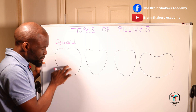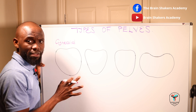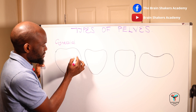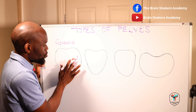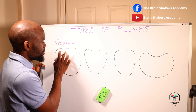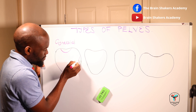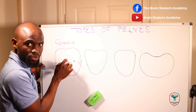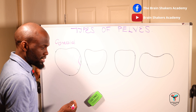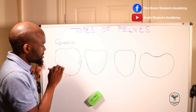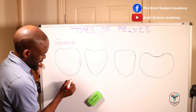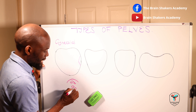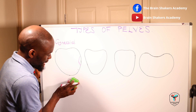Looking at the gynecoid pelvis — this is basically the pelvic brim. This is a roomier pelvis. The ischial spines are not prominent; they are well-rounded. The sacral promontory is not protruding much, and the ischial spines are blunt. The sacral promontory is not deviating significantly into the inner part, and the ischial spines are not prominent. You have a curved sacrum forming the curve of the carousel. At the outlet, the subpubic angle is at least 90 degrees.